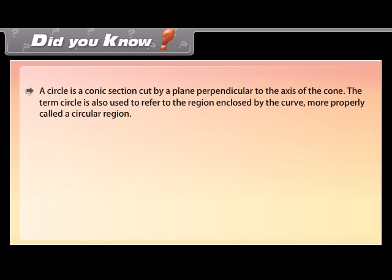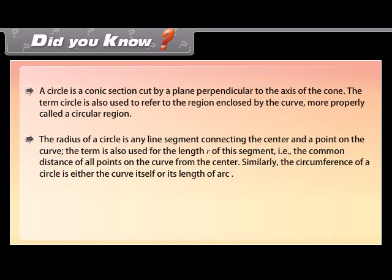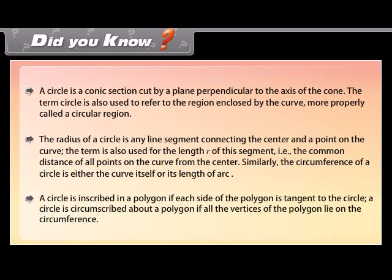Did you know? A circle is a conic section cut by a plane perpendicular to the axis of the cone. The term circle also refers to the region enclosed by the curve, more properly called a circular region. The radius is any line segment connecting the center to a point on the curve, as well as the length r of that segment. The circumference is either the curve itself or its length. A circle is inscribed in a polygon if each side is tangent to the circle, and circumscribed about a polygon if all vertices lie on the circumference.